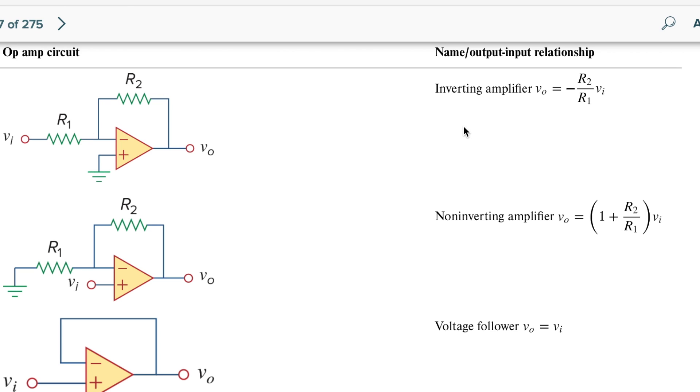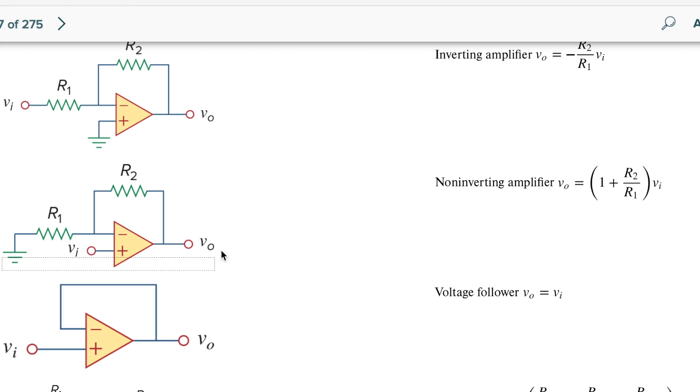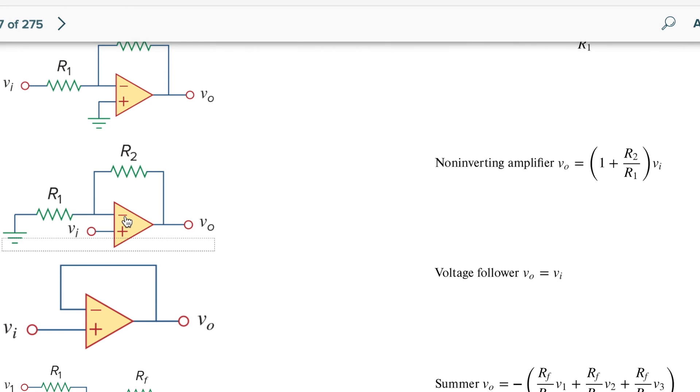This is an inverting amplifier. This is its equation or the relationship between output and input. This is a non inverting amplifier and this is a voltage follower.